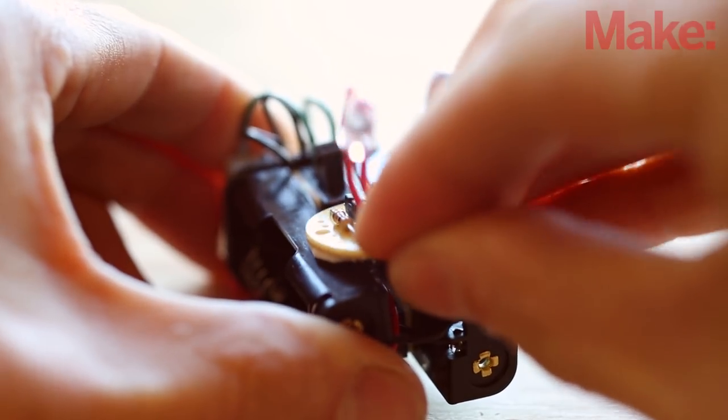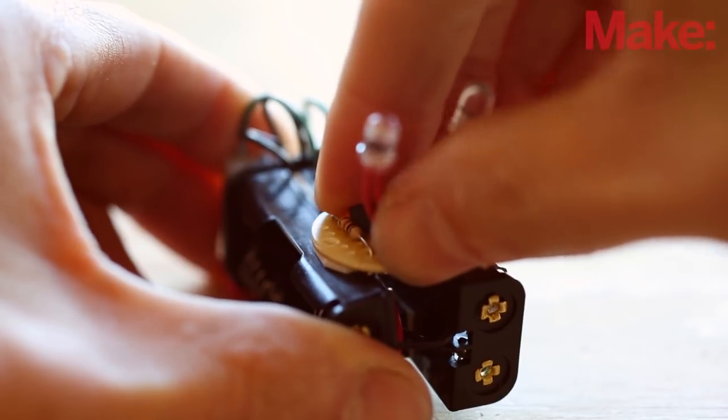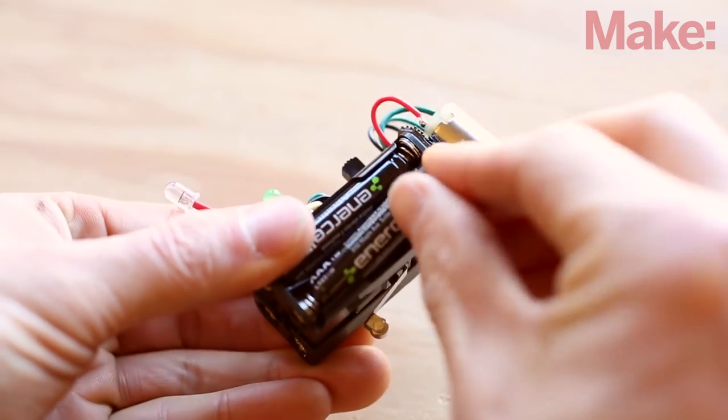Apply double-sided foam tape to the bottom of the PCB and attach it to the top of your bot. Now install the four AAA batteries.